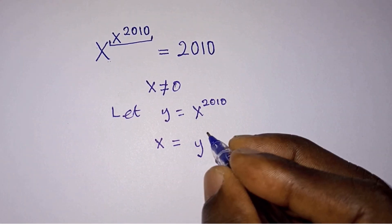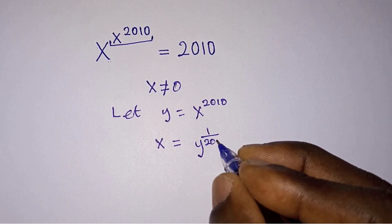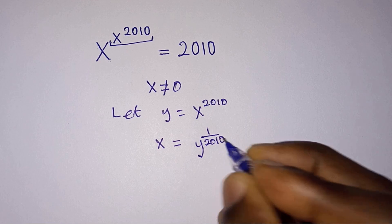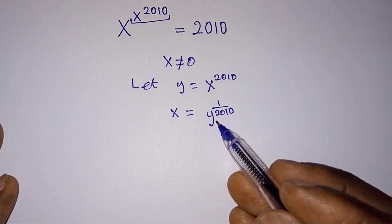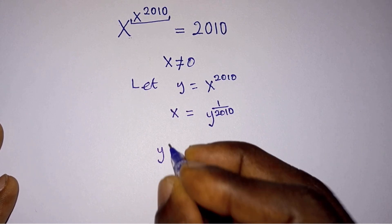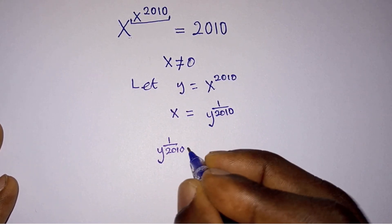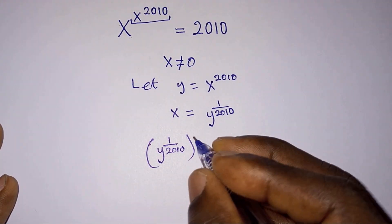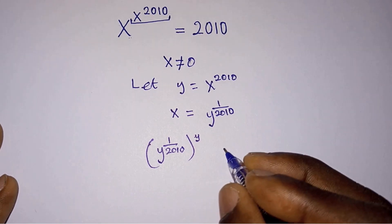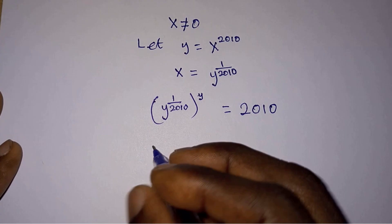Straight away we have x is equal to y to the power 1 over 2010 when we raise each side of the equation to the power 1 over 2010. So let's replace this x by y to the power 1 over 2010. Then we will also replace this power by y.